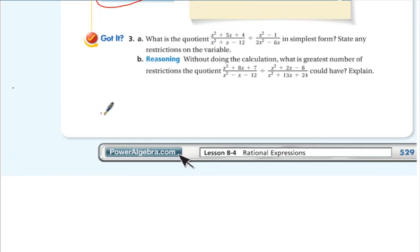So this is a good one. Go ahead and give got it 3 a try. Pause the video right here and give that a try. Alright you're back. Hopefully what you got for 3a is 2x over x minus 1 and that x cannot be equal to 1, negative 1, negative 4, or 3.